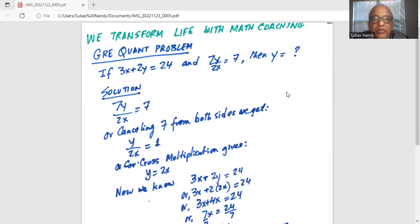The GRE quant problem: if 3x plus 2y equals 24 and 7y divided by 2x equals 7, then y equals what? Solution: 7y divided by 2x is equal to 7.